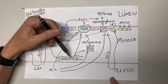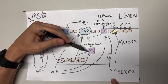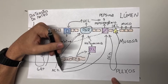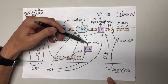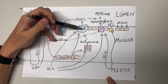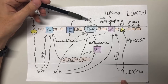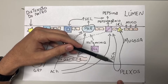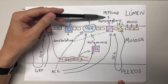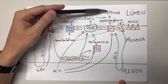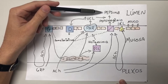A gastrina segue pelo sangue até atingir as células parietais e ECL. Essas duas células também podem ser estimuladas via nervo vago pela acetilcolina. A célula parietal faz secreção de HCl para o lúmen, e a célula ECL secreta histamina, que paracrinamente estimula a célula parietal, produzindo mais HCl. Essa acidez é detectada por neurônios sensitivos, que mandam informações para os plexos, que respondem liberando acetilcolina, estimulando as células principais. As células principais secretam o pepsinogênio, que na luz do estômago, em meio ácido, é clivado, passando à sua forma ativa, a pepsina. A pepsina também é autocatalítica: a própria presença de pepsina no estômago estimula a ativação de outras moléculas de pepsinogênio.